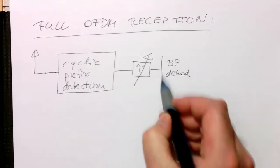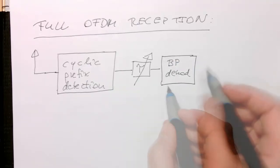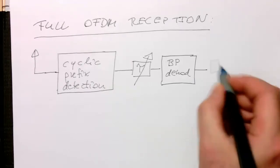Remember, the delay is in front of the bandpass demodulator to have more precision. And then here we've got our Fourier transform.